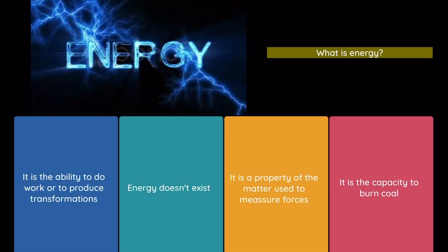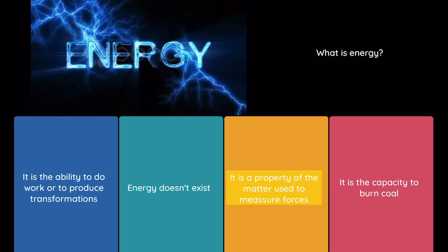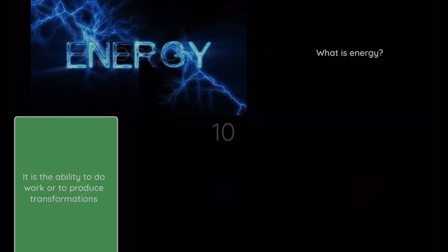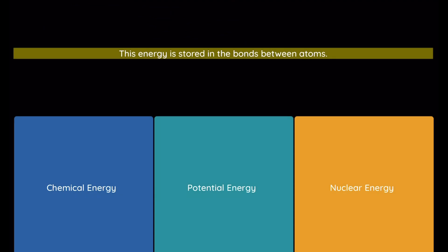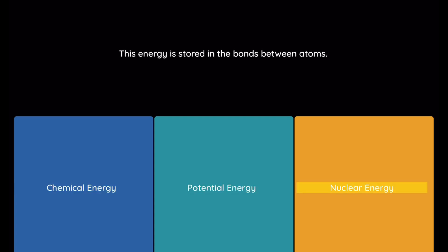Question: What is energy? Option 1: it is the ability to do work or to produce transformations. Option 2: energy doesn't exist. Option 3: it is a property of the matter used to measure forces. Option 4: it is the capacity to burn coal. Question: This energy is stored in the bonds between atoms. Option 1: chemical energy. Option 2: potential energy. Option 3: nuclear energy.